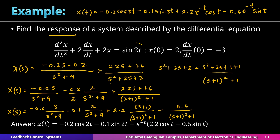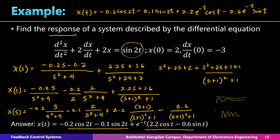This confirms our answer. Since the input is sinusoidal, we expected a sinusoidal output — the terms −0.2cos(2t) − 0.1sin(2t) represent the steady-state sinusoidal response. The transient part is the decaying exponentials 2.2e^(−t)cos(t) − 0.6e^(−t)sin(t), which is a sinusoid that decays with time. The complete response is the sum of the steady-state response and the transient response.